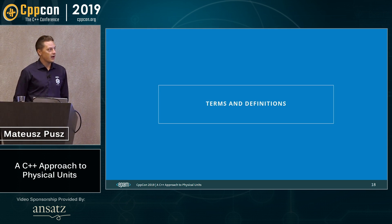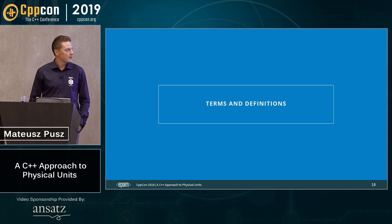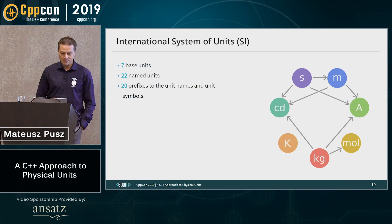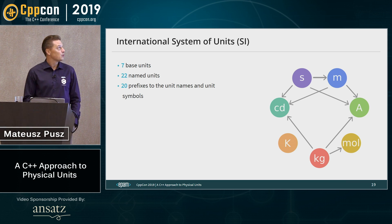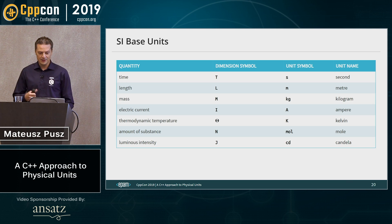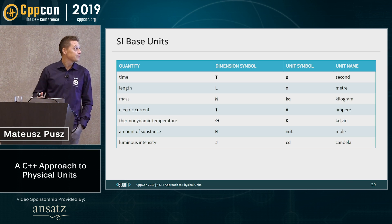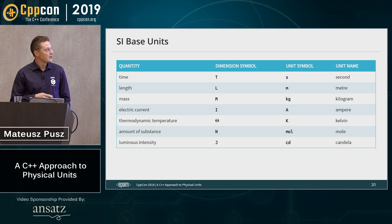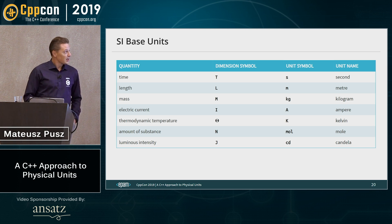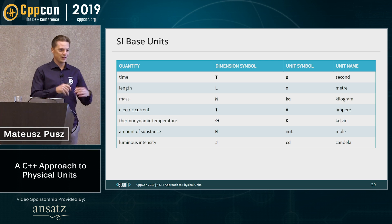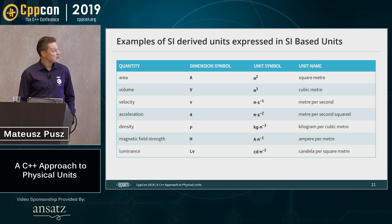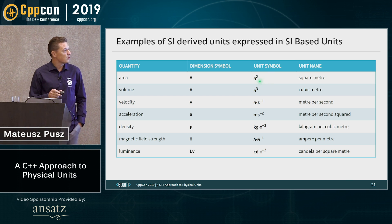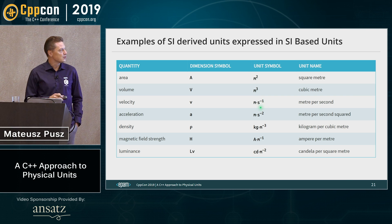Before we go into the details, let's talk about terms and definitions. The International System of Units consists of seven base units, 22 named units, and 20 prefixes. The base units are: time, length, mass, electric current, thermodynamic temperature, amount of substance, and luminous intensity. Each has its own symbol and unit name. These are just the basic building blocks for deriving more complex dimensions — derived dimensions using base units like square meters, cubic meters, meters per second, and so on.